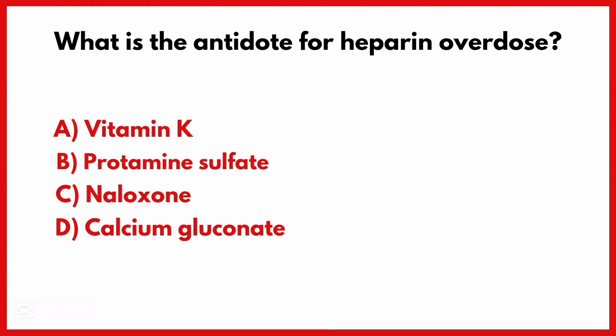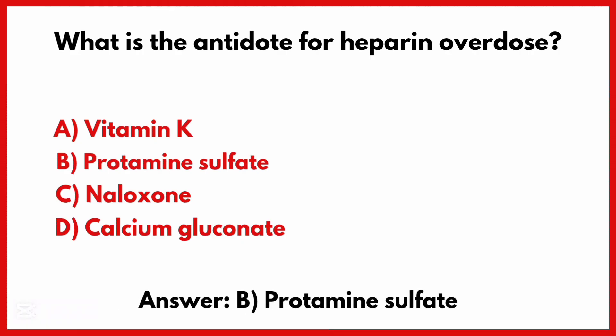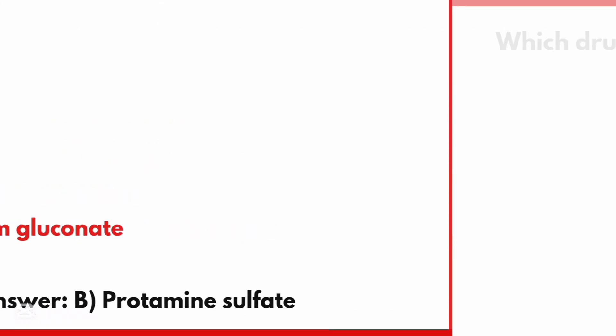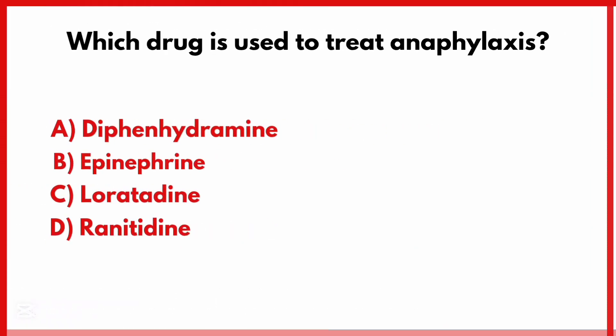What is the antidote for heparin overdose? Correct answer is option B. Protamine sulfate.